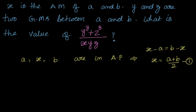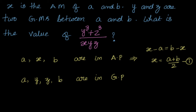Next, y and z are two GMs between a and b. The meaning of that is: a is there, after that the first GM is y, the next one is z, and the next one is b. So a, y, z, b are all in GP. We will take the common ratio as r.